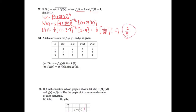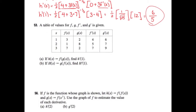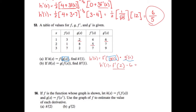In number 53, part a, they ask: if h of x equals f of g of x, find h prime of 1. My baby is g of x and I'm doing f of g of x. So h prime of x is f prime of box times the derivative of the box, where the box is g of x, so h prime of x equals f prime of g of x times g prime of x. To find h prime of 1: g of 1 is 2, g prime of 1 is 6, and f prime of 2 is 5. So 5 times 6 is 30.